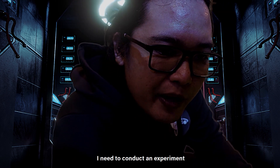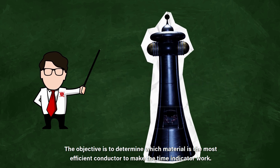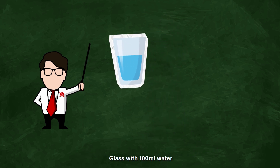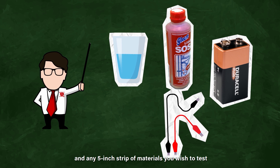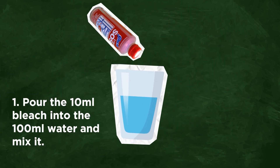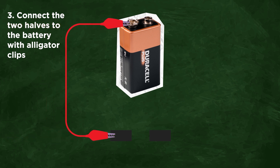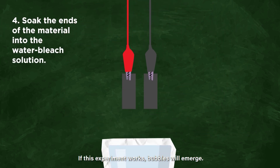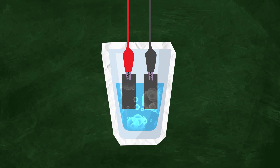I need to conduct an electrolysis experiment. The objective is to determine which material is the most efficient conductor to make the time indicator work. To perform this, you need the following: a glass with 100ml water, 10ml bleach or liquid sosa, one 9V battery, and any 5-inch strip of materials you wish to test. Pour the 10ml bleach into the 100ml water and mix it. Next, cut your experimental material in half. Connect one half to the positive terminal of the battery with an alligator clip, and connect the other half to the negative terminal. Soak the ends of the material into the water-bleach solution. If this experiment works, bubbles will emerge. The more bubbles you see, the more efficient conductor your material is.